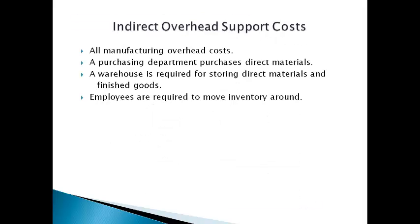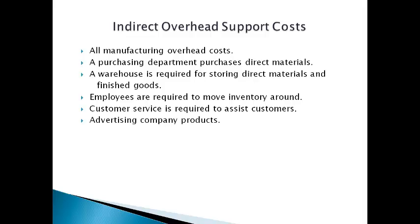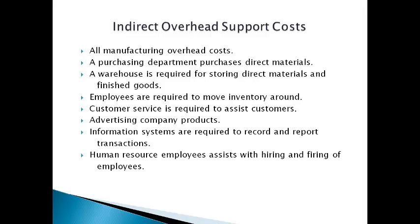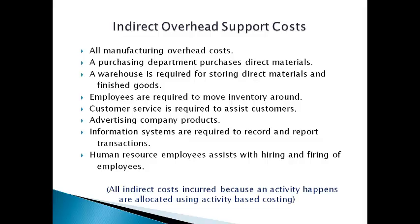The most common indirect overhead support costs that are allocated to products are manufacturing overhead costs, purchasing and warehouse costs to support production, customer service costs, and system and human resource costs. Any costs the company incurs that are caused by a particular activity can be allocated to individual product lines using activity-based costing.